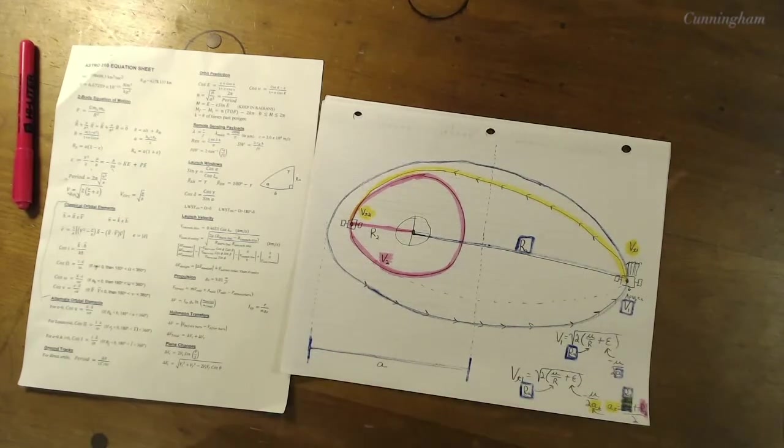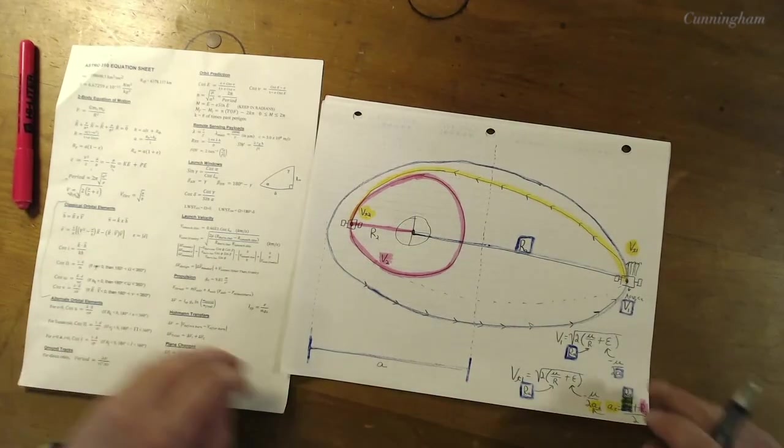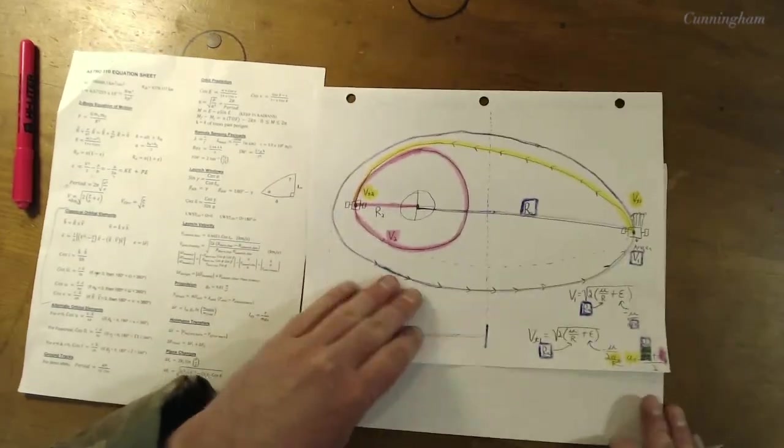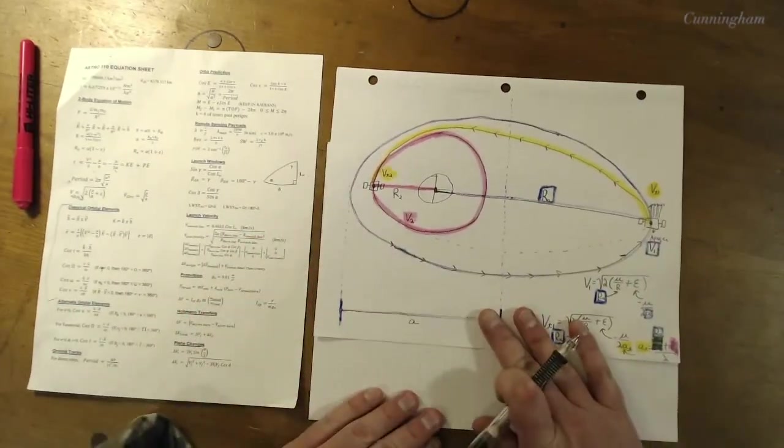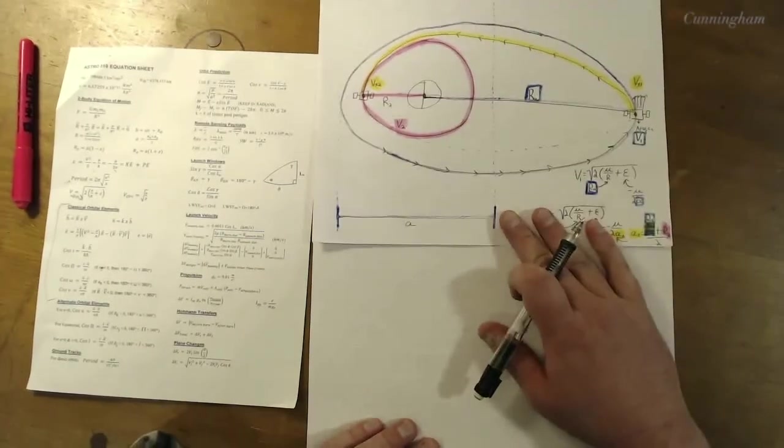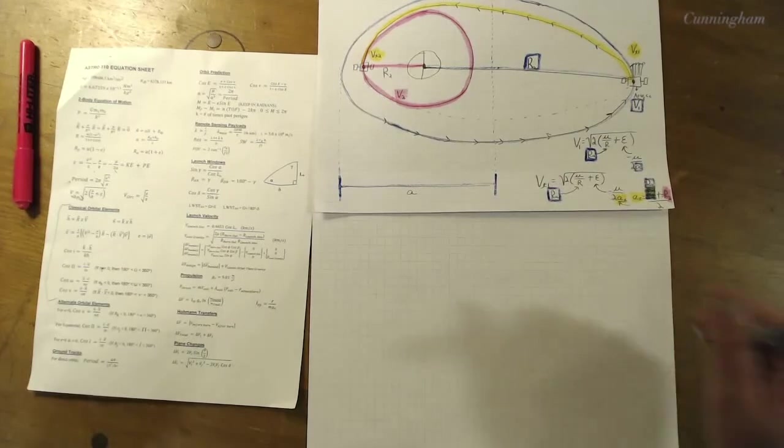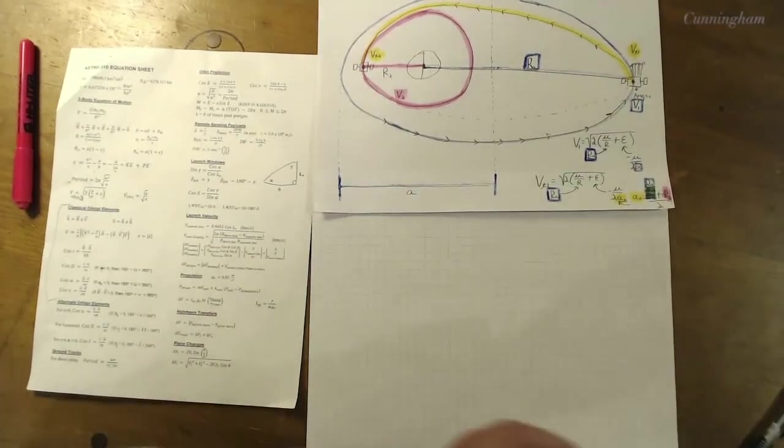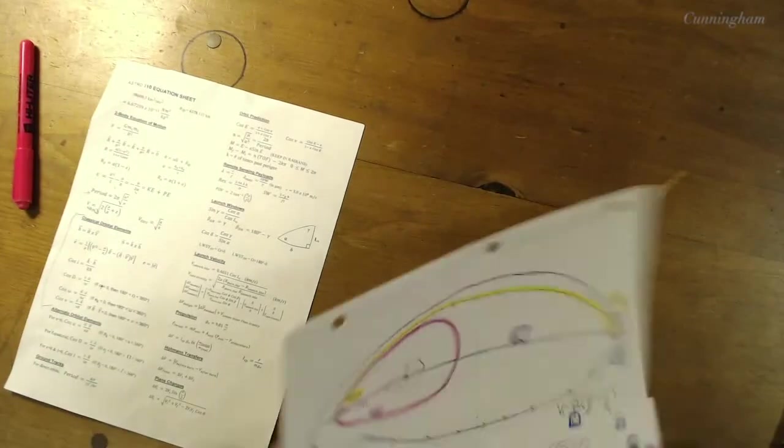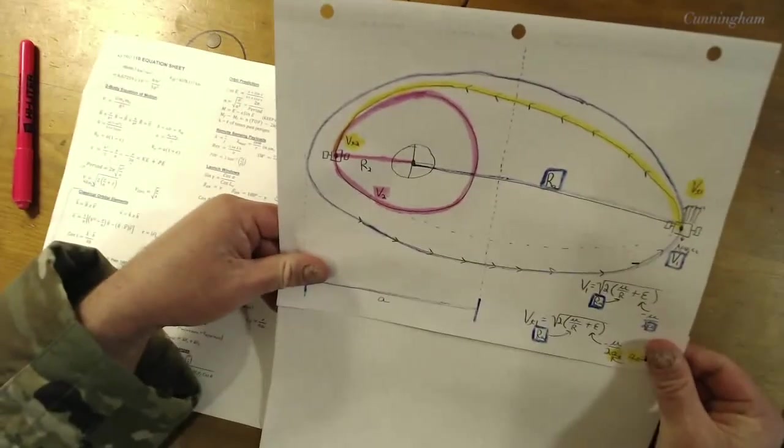We'll rewrite it. There we go, the radius of apogee of the mission orbit, here we go. All right, that'll give us a semi-major axis of our transfer orbit. All right, it's all coming together. I love it when a plan comes together.